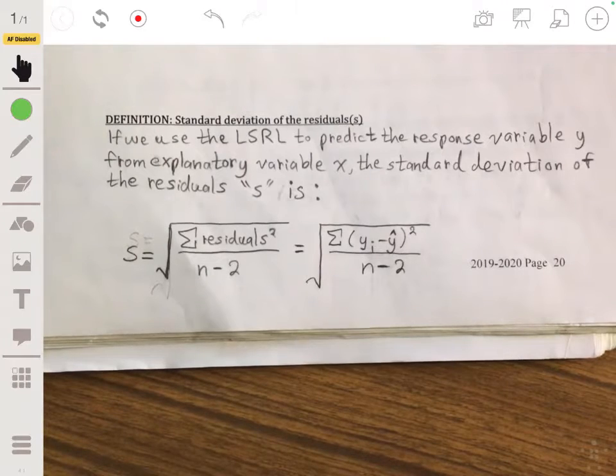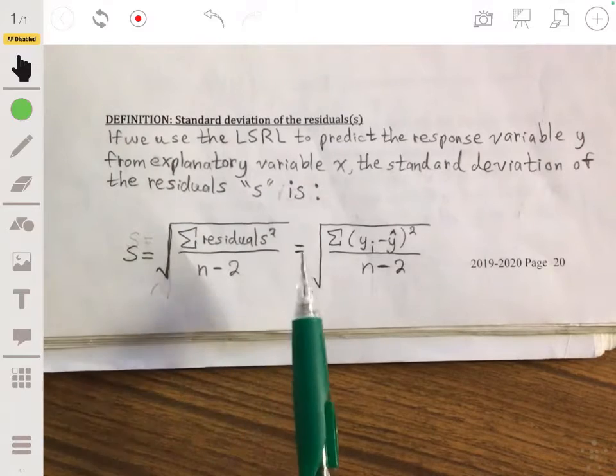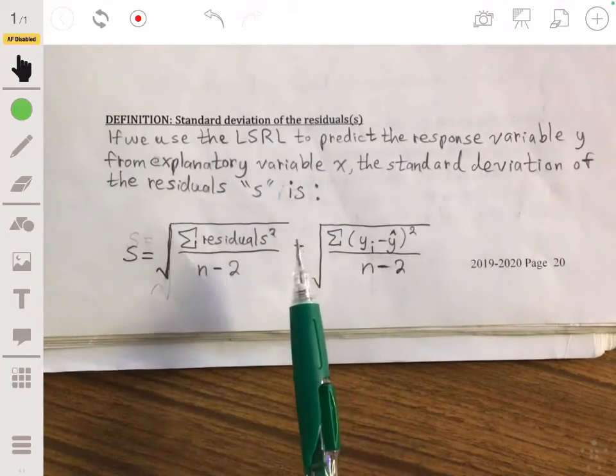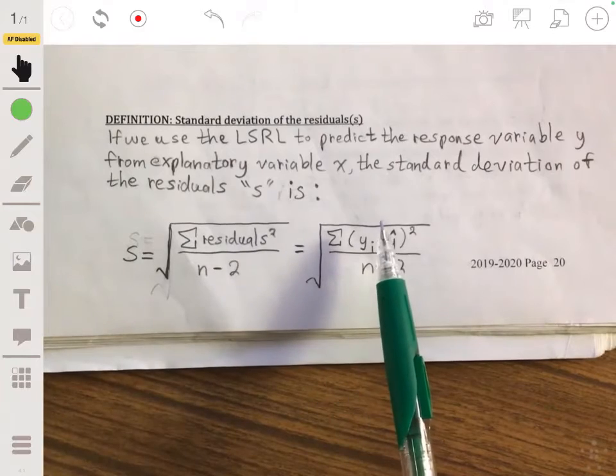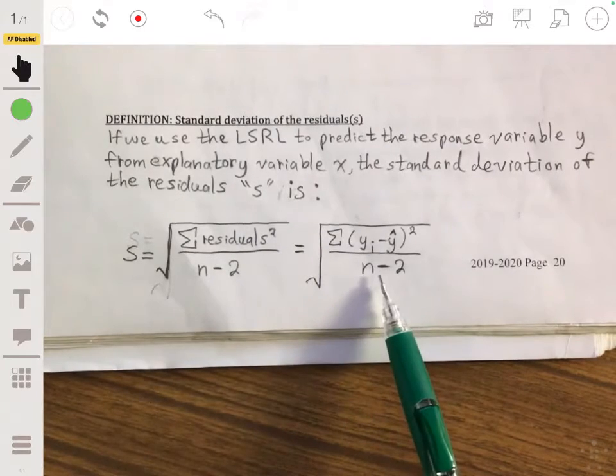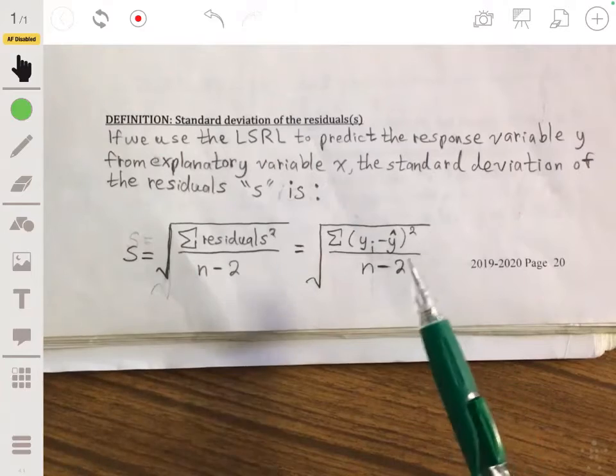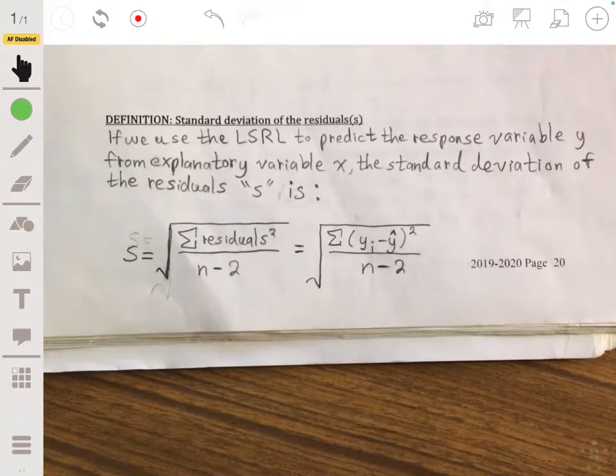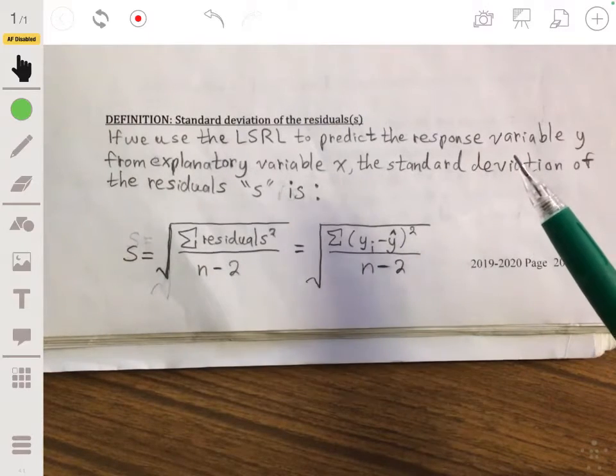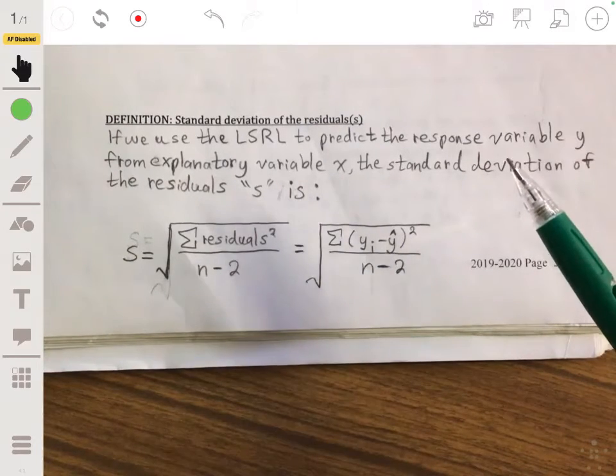Now the formula for the standard deviation of the residuals is pretty similar to the standard deviation, except you're dividing by n minus two instead of n minus one. The reason for that is a little bit more technical. It has to do with degrees of freedom and approximation error, and that will be something you'll cover in a more advanced stats class. The main idea you want to understand is that it's basically a number that's going to give you an idea of how off your predictions will be.